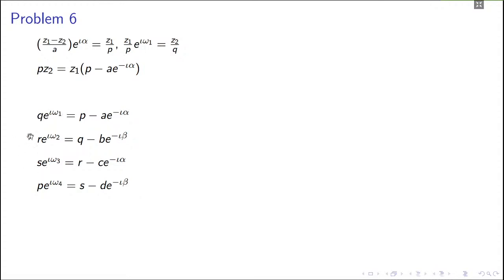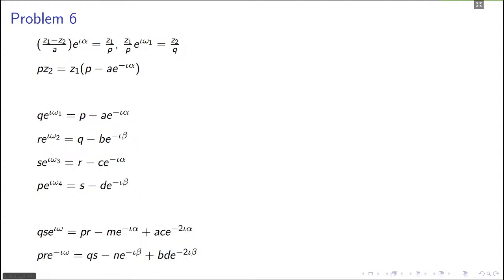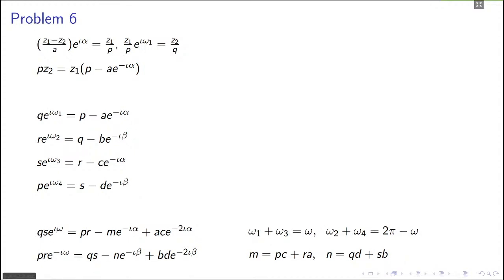Now I want to get omega one plus omega three. A natural approach is to multiply the first and third rotation equations together, and also the second and fourth. Note that omega two plus omega four equals 2*pi minus (omega one plus omega three). Multiplying first with third and second with fourth gives two equations of the form involving p*r and q*s. Writing omega one plus omega three as omega, and omega two plus omega four as 2*pi minus omega, the factor e^(i*(2*pi minus omega)) simplifies nicely, giving us two clean relations with m and n defined accordingly.